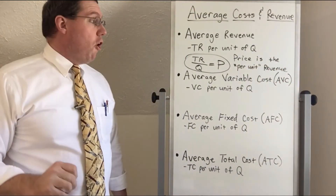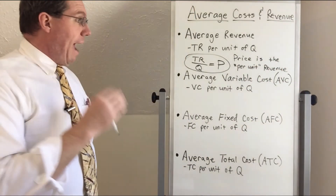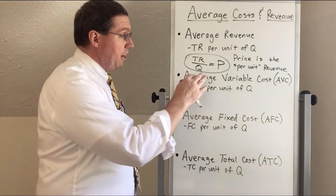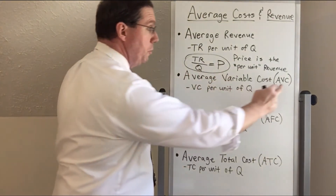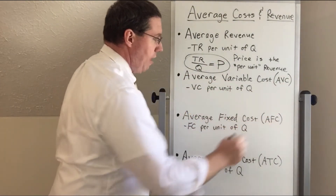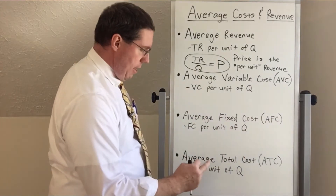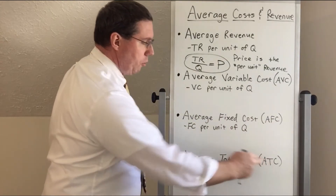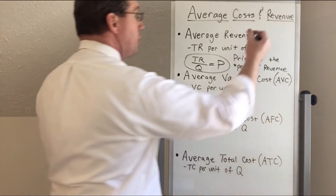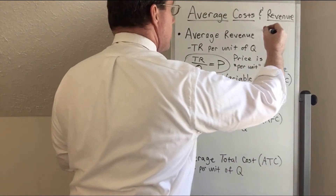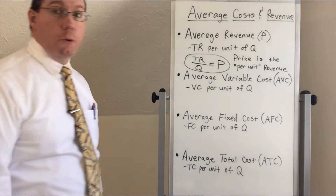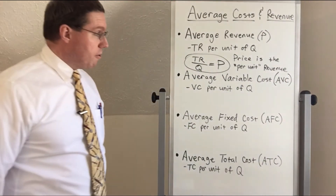We've already been dealing with price — it's one of our original seven variables. I wanted to frame it in a different way so that you understand that another way of referring to price is as the average revenue, or total revenue divided by quantity. So we can say that price is the per unit revenue of a firm. Now let's talk about average costs. We have average variable costs (AVC), average fixed costs (AFC), and average total costs (ATC). Let's put a P up here for average revenue, which is price.